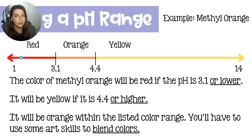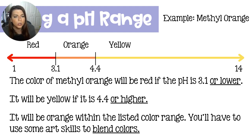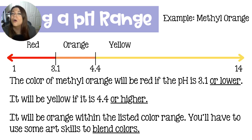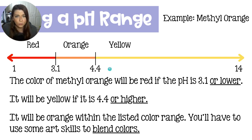A pH of 3.1 and lower would be red. A pH of 4.4 and higher would be yellow. Anything in the middle is going to be whatever red and yellow make when mixed together, which in this case is orange — that wasn't listed on the table; you need a little bit of art skills for pH ranges. So if you test a solution with methyl orange and it comes back red, you know the pH is somewhere between 1 and 3.1. If it comes back orange, the pH is somewhere between 3.1 and 4.4. But if it comes back yellow, it is anywhere from 4.4 all the way to 14 — which is crazy, because yellow with methyl orange really is telling you nothing. You have almost no information.